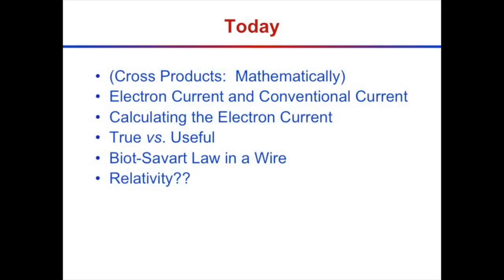Today we'll review those cross products mathematically, and also discuss the difference between electron current and conventional current. Conventional current is what everyone uses to calculate things, but it turns out that electrons are actually what really carries the current. We'll also have a little story time about true versus useful, and look at the Biot-Savart law in a wire.